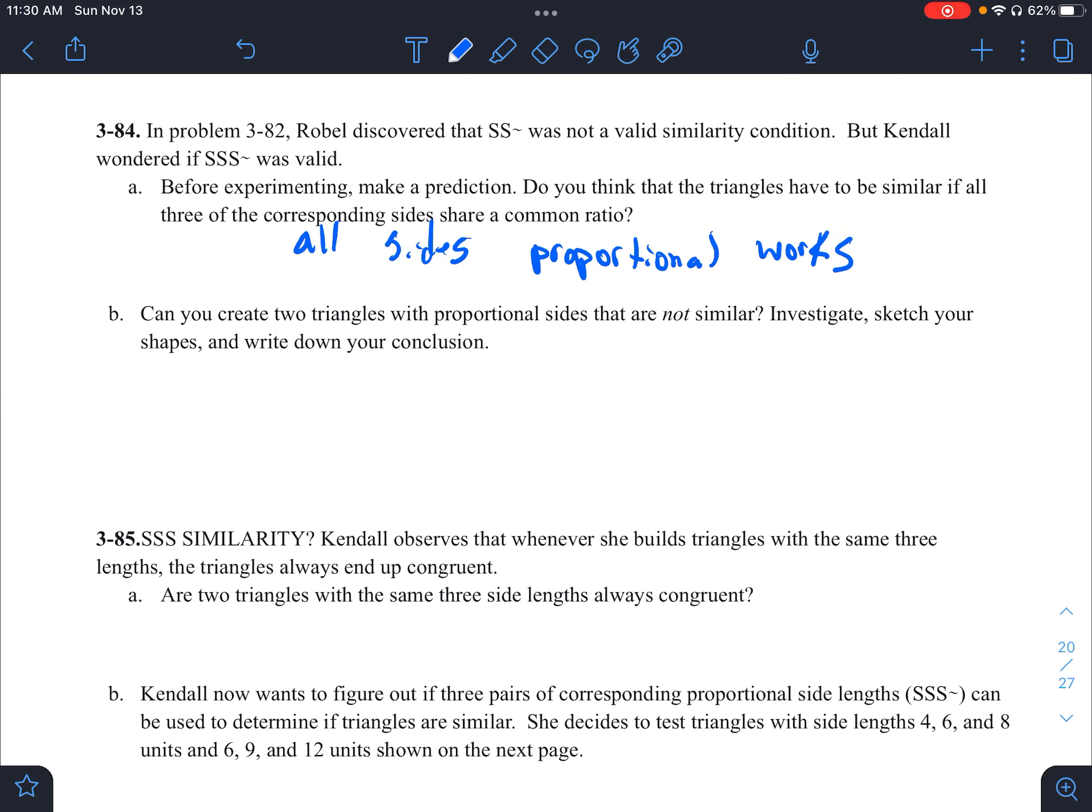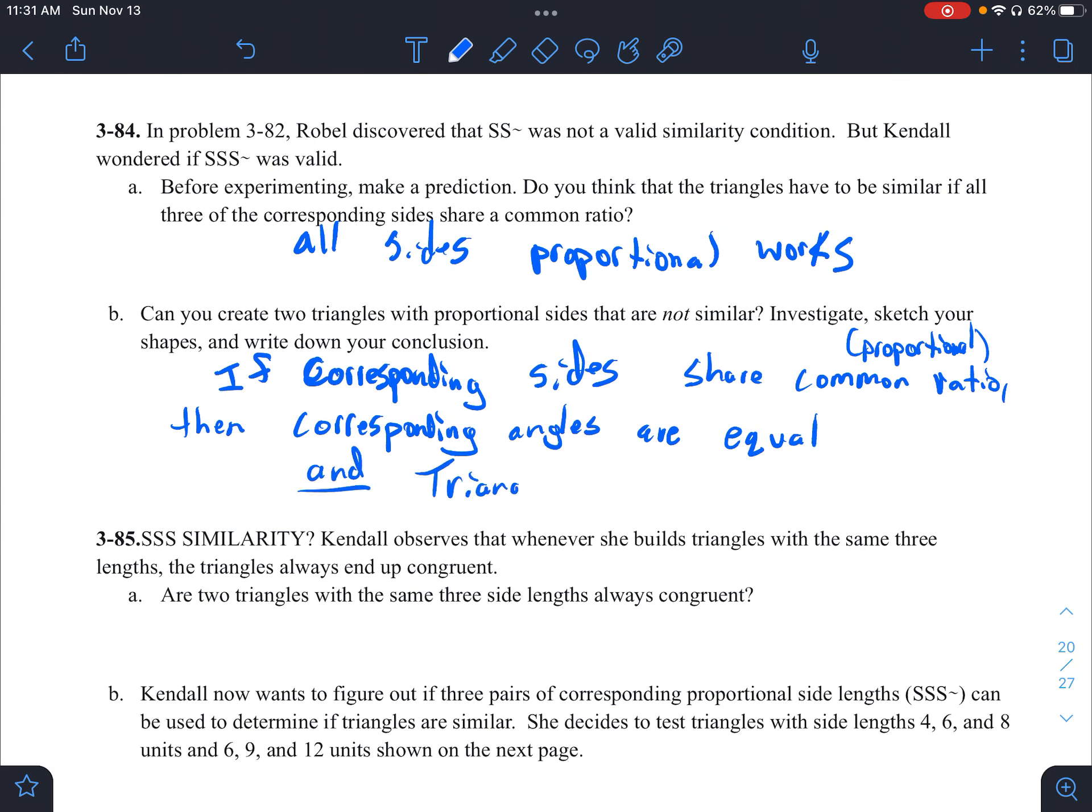So then in letter B it says, can you create two triangles with proportional sides that are not similar? Investigate, sketch your shapes and write down your conclusion. So with this one, if corresponding sides share a common ratio, and this is really what I mean by saying proportional, then corresponding angles are equal. And the more important part, triangles are similar.